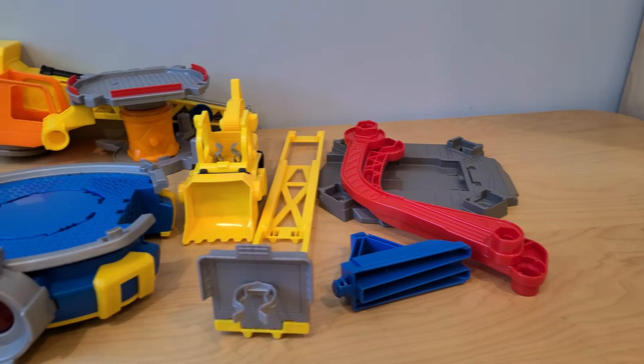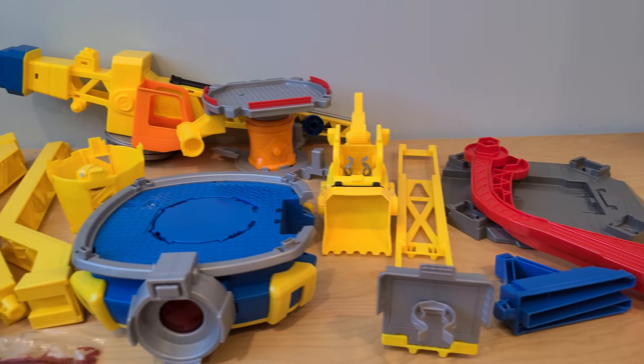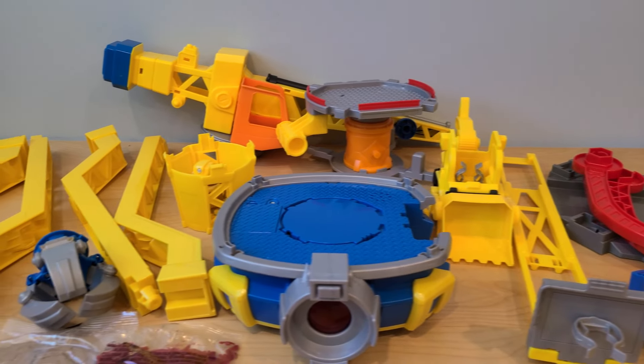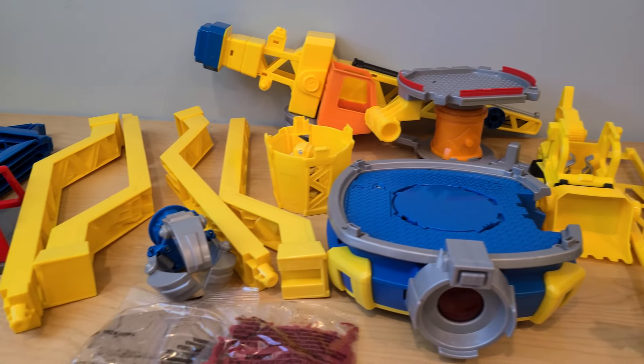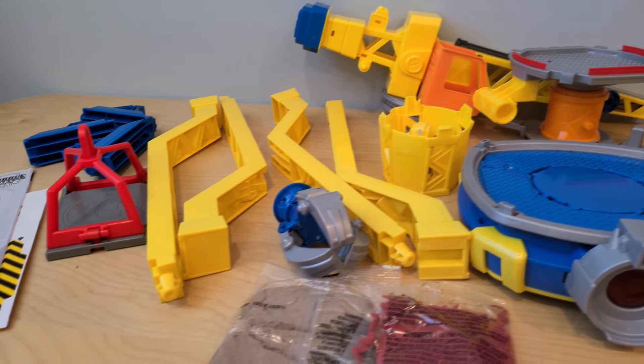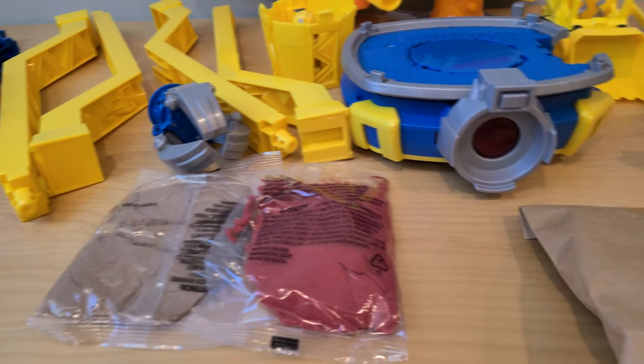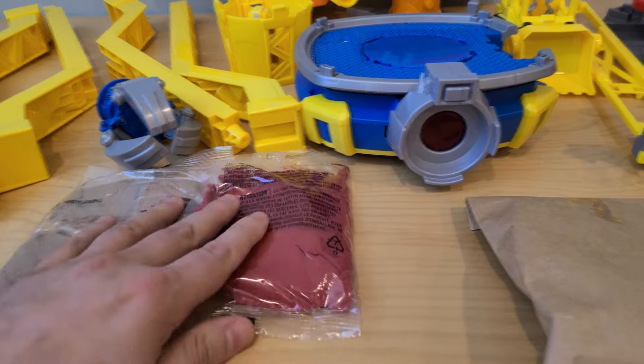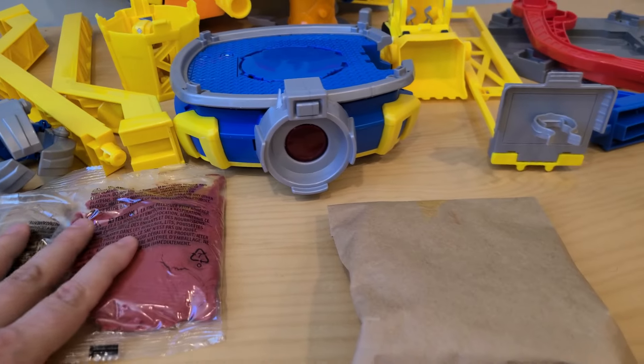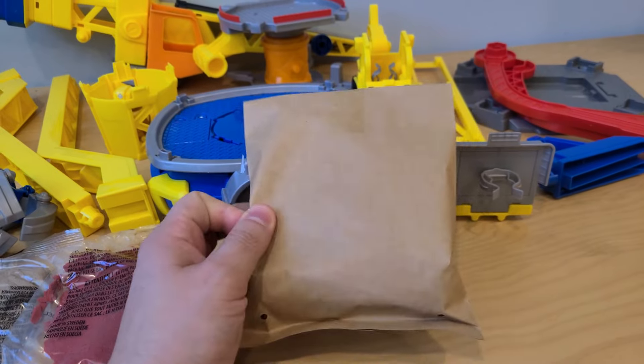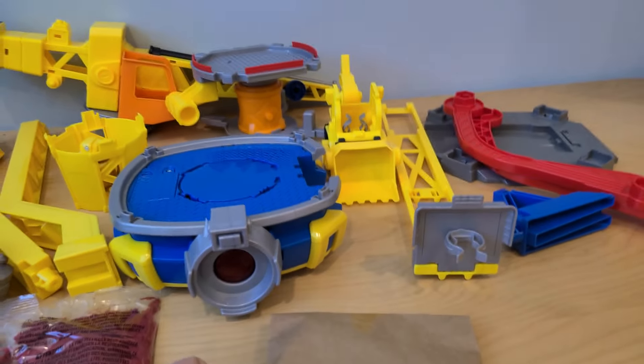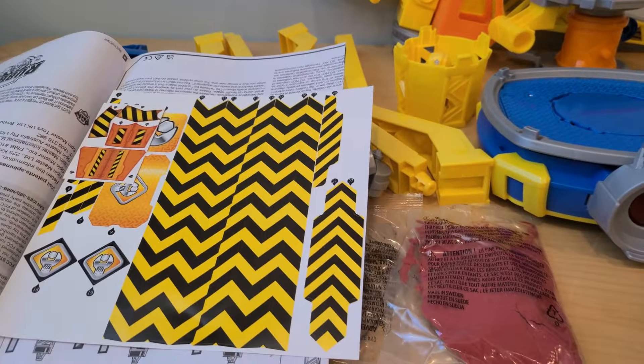Once we take everything out of the box, these are all the pieces in our playset. This is going to be a very big crane. Here is our kinetic sand that we're going to be working with. We have a small brown bag and here are our instructions and of course we have some stickers.